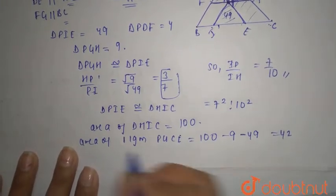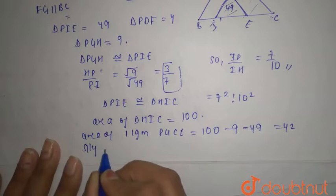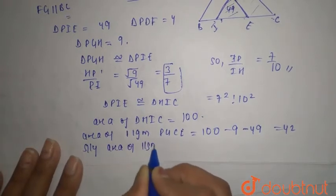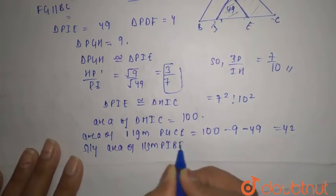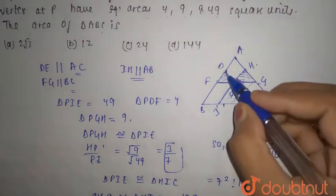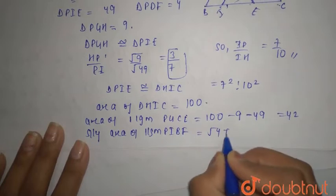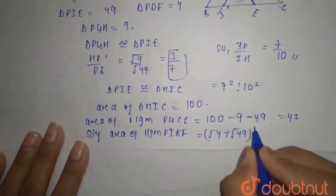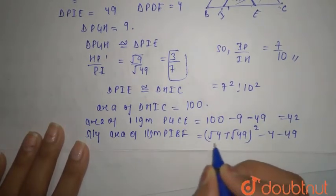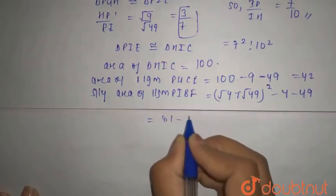So the area of parallelogram PGCI equals 100 minus 9 minus 49, which is 42. For the second parallelogram, area of PIBF equals (√4 + √49)² minus 4 minus 49, which is 81 minus 53.